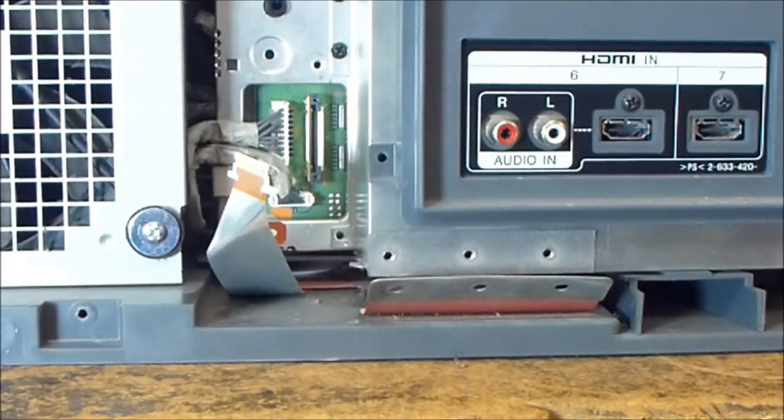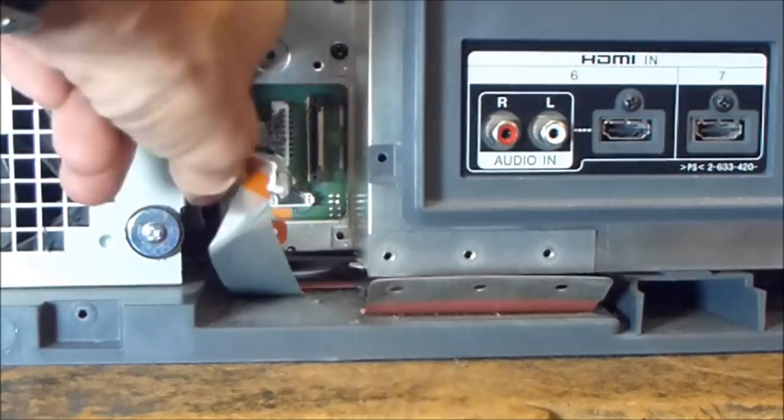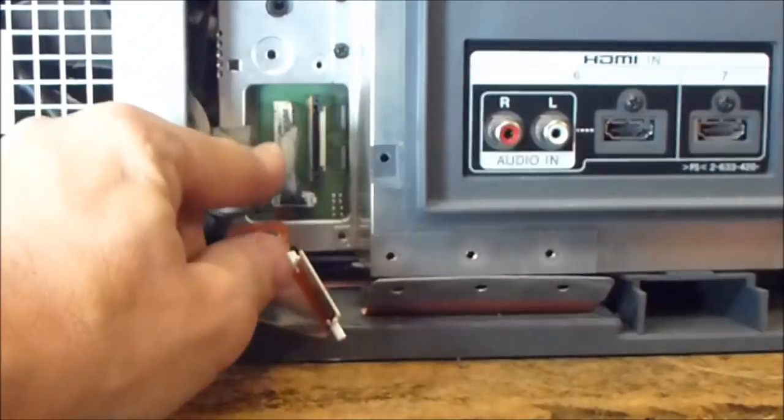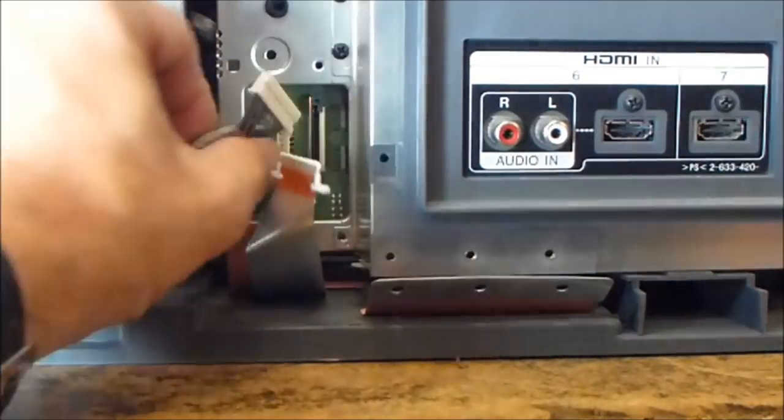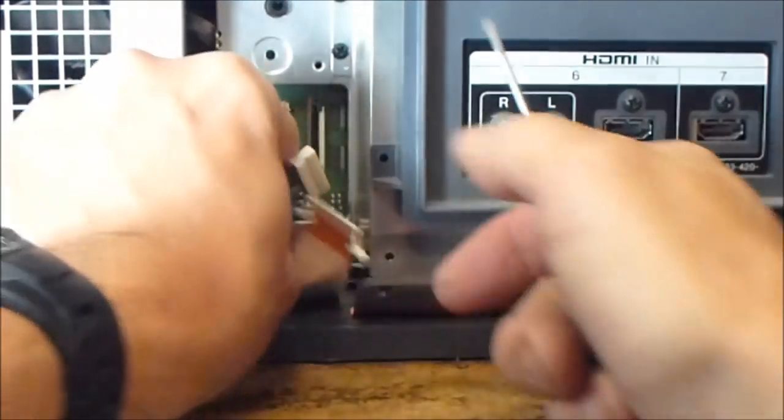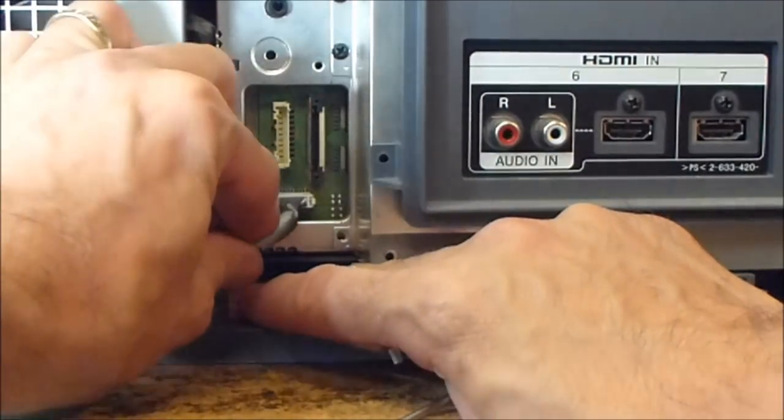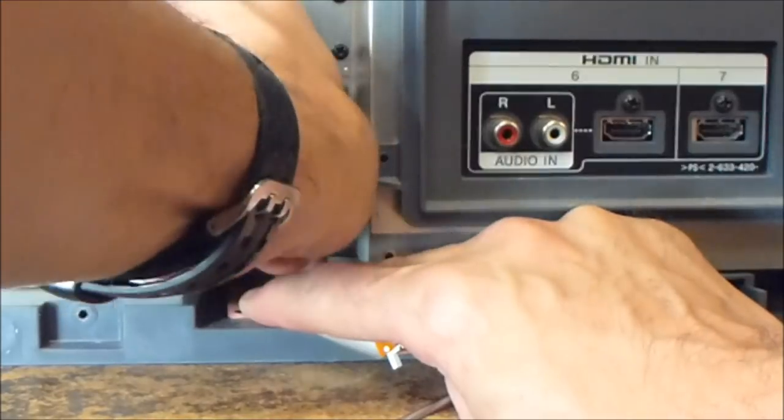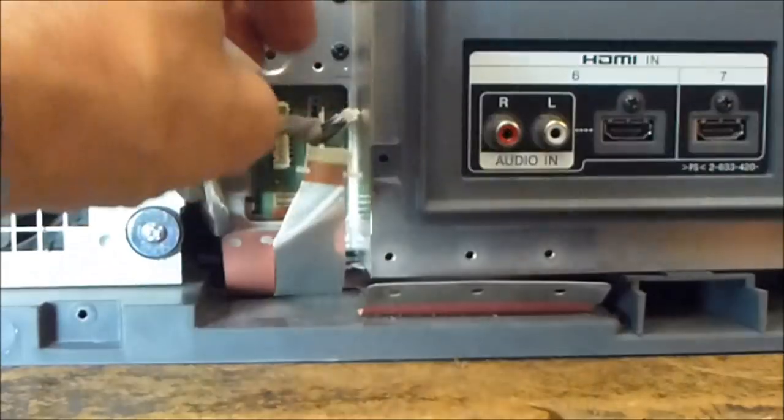You can see under there, there's two more cables that have to be released. This one cable has a tab on the left-hand side, you have to press and simultaneously pull out. This one on the bottom, hard to see things are getting in the way, but it has two tabs, one on each side. You just have to press both tabs simultaneously, and that comes out.